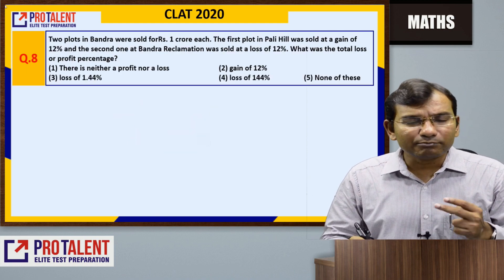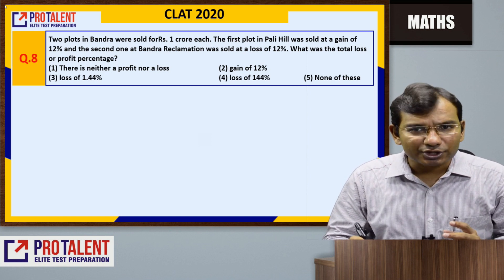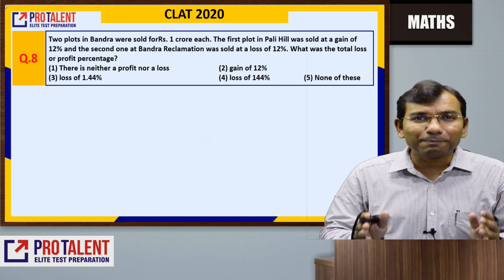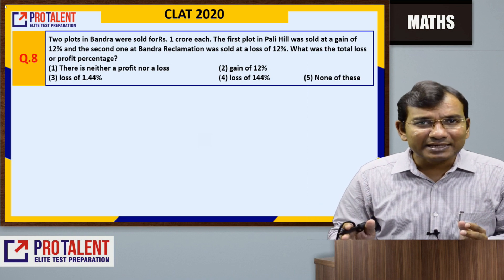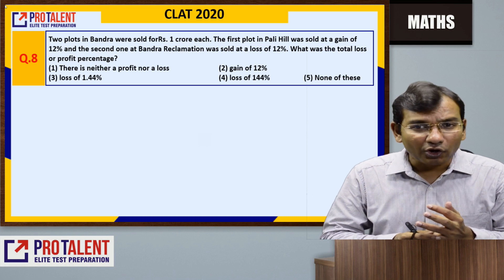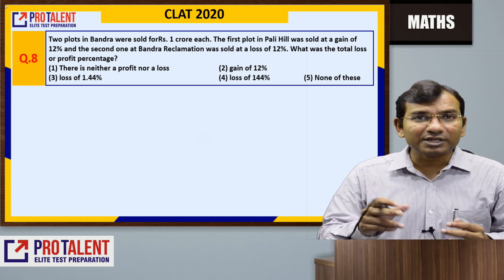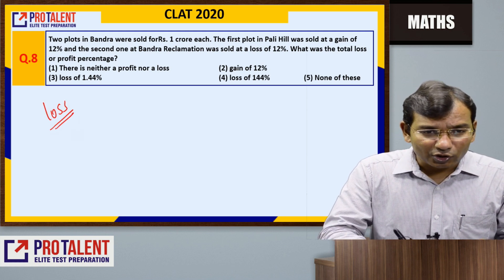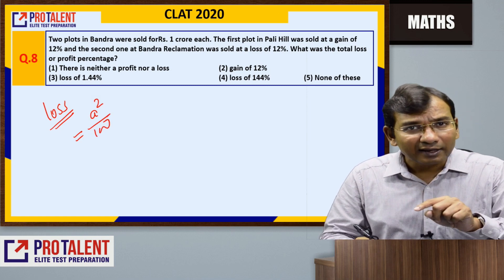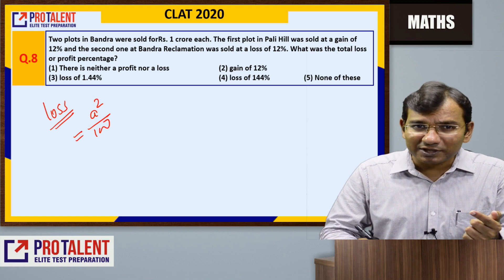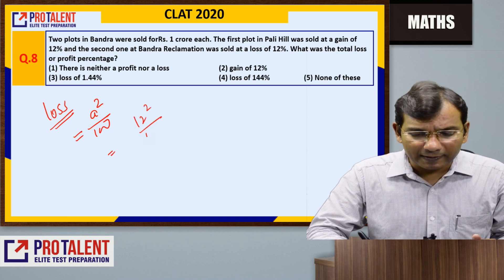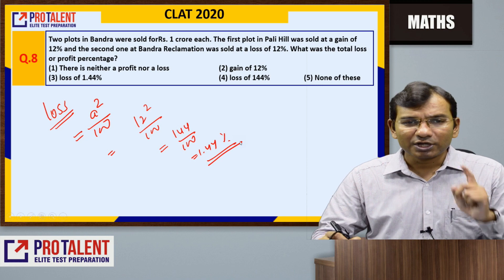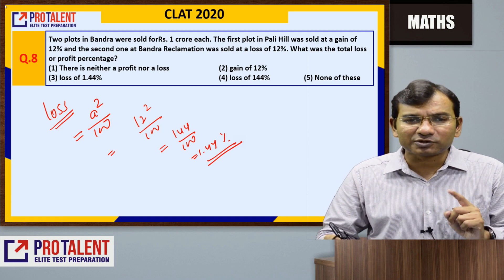Question 8: Two plots in Bandra were sold for 1 crore each — on one there is a gain of 12% and on the other a loss of 12%. When two items are sold at the same price with equal gain and loss percentages, there is always an overall loss. Loss percentage = a² / 100 = 12² / 100 = 144 / 100 = 1.44% loss.